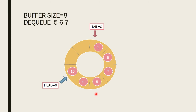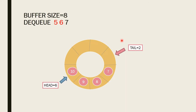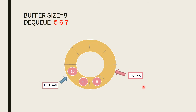At the same time, if we want to dequeue 5, 6, and 7 — that means we remove those values from the circular buffer. When we dequeue 5, the tail is incremented to 1. We dequeue 6 — tail is incremented to 2. We dequeue 7 — tail is incremented to 3. The process continues in this manner.